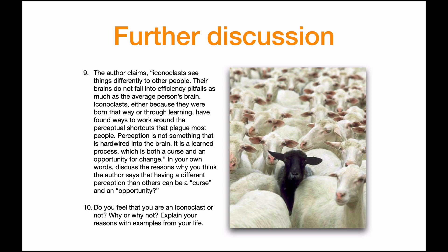Further discussion: The author claims, 'Iconoclasts see things differently to other people. Their brains do not fall into efficiency pitfalls as much as the average person's brain. Iconoclasts, either because they were born that way or through learning, have found ways to work around the perceptual shortcuts that plague most people. Perception is not something that is hardwired into the brain — it is a learned process, which is both a curse and an opportunity for change.' In your own words, discuss the reasons why you think the author says that having a different perception than others can be a curse and an opportunity. Do you feel that you are an iconoclast or not? Why or why not? Explain your reasons with examples from your life.